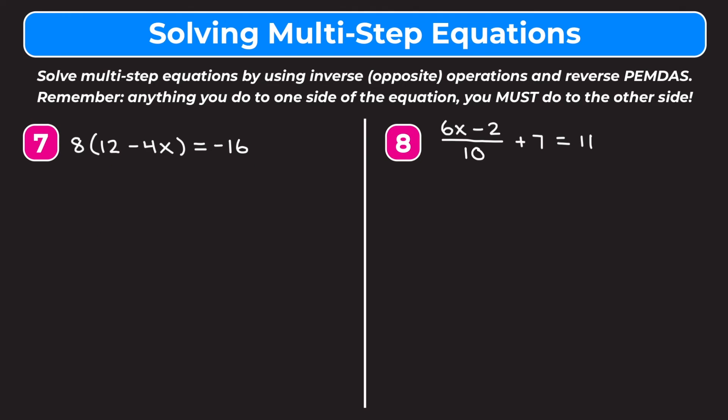For the last two examples, I encourage you to pause the video and try them on your own, then watch my explanation to check your answer. For number 7, we can start by distributing the 8 or dividing both sides by 8. I find it easier to divide both sides by 8. Dividing the left side: 8 divided by 8 is 1, so they cancel and we're left with 12 minus 4x. On the right negative 16 divided by 8 is negative 2.